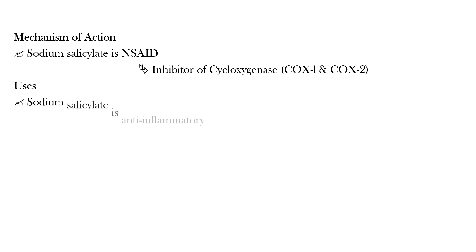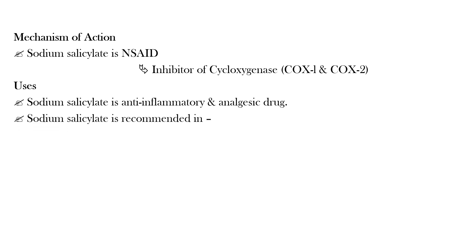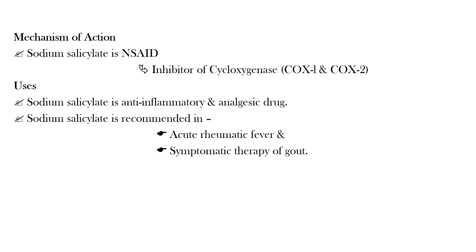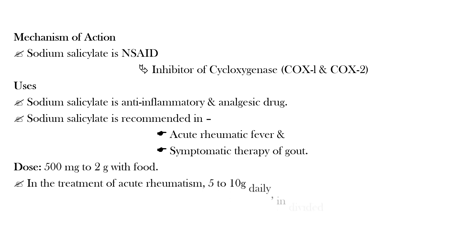Sodium salicylate is an anti-inflammatory and analgesic drug recommended in the treatment of acute rheumatic fever and symptomatic therapy of gout. Its dose is 500 mg to 2 g with food. In the treatment of acute rheumaticism, 5–10 g may be taken daily in divided doses.